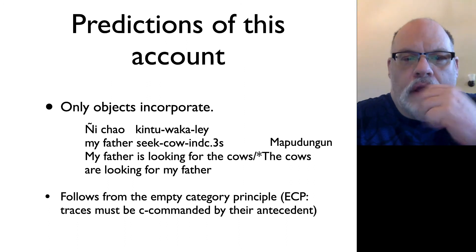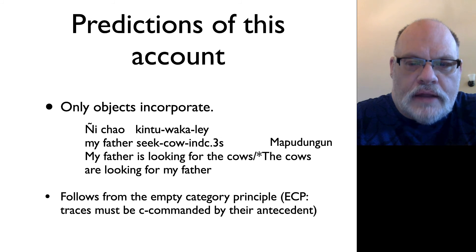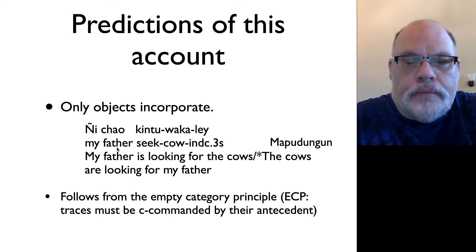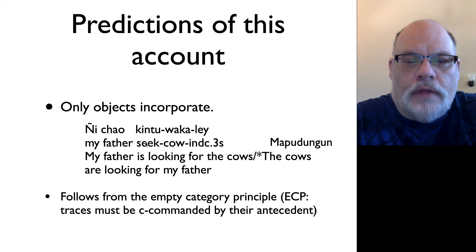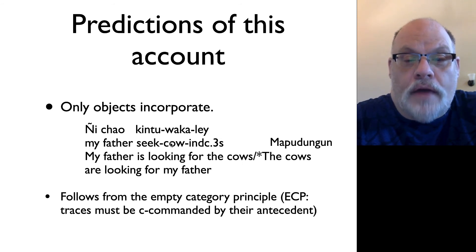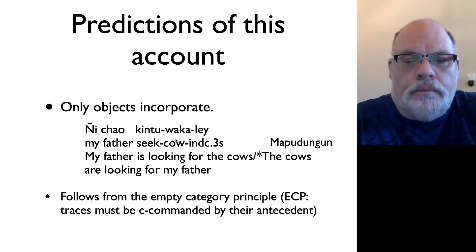The second prediction is that only objects are ever going to incorporate, and that indeed seems to be the case. In Mapudungun, the word for 'cow' has been incorporated into the verb, right in the middle of all the verbal morphology. This particular sentence can only mean 'my father is looking for the cows' — only the cow, the object, can be inside the verb. There's no interpretation where the cows are looking for my father, so cow can only be interpreted as the object. This seems to be true for the vast majority of languages: only objects ever incorporate.